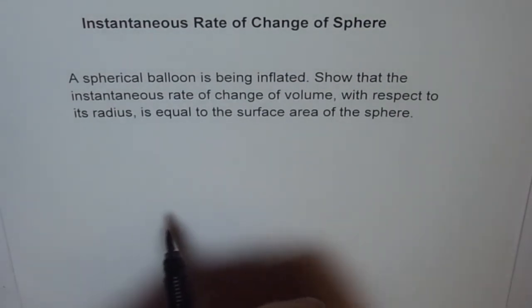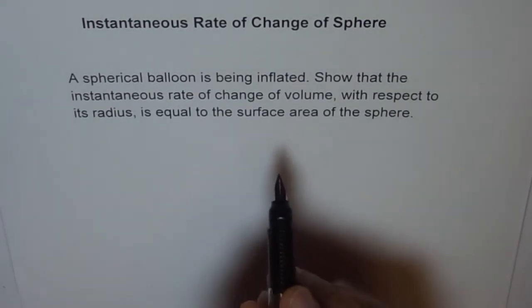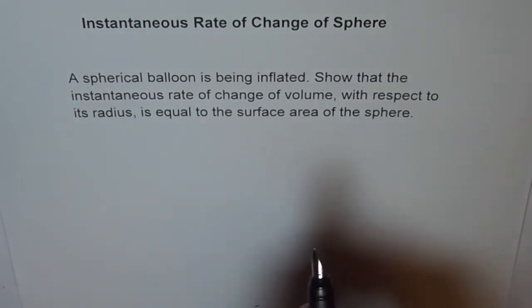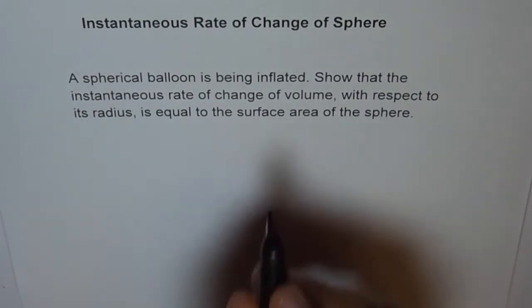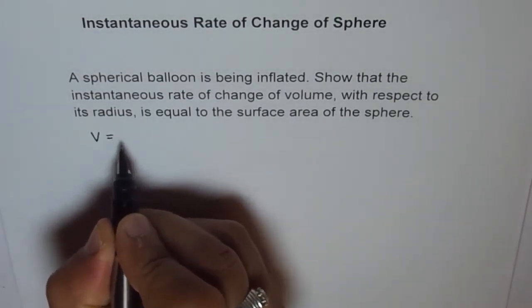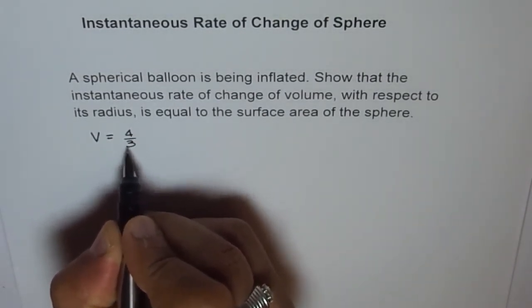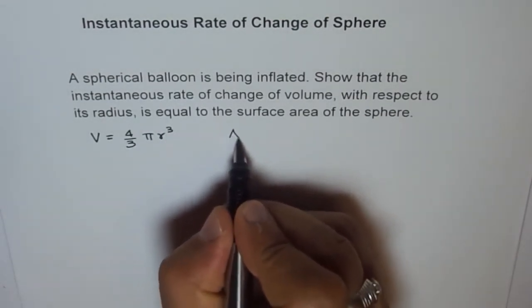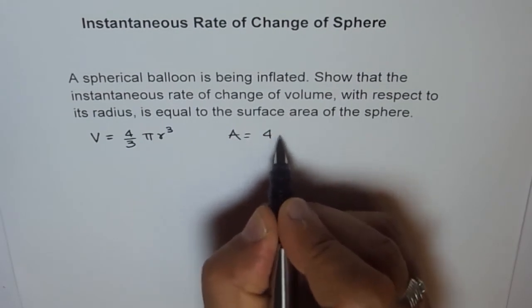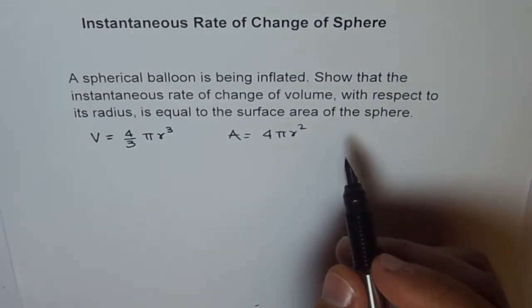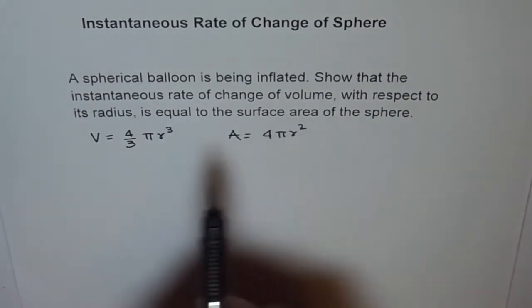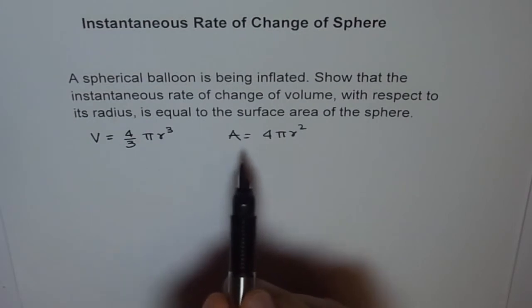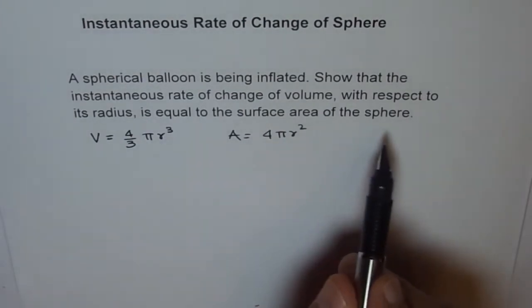The balloon is in the shape of a sphere and we need to find the instantaneous rate of change of volume with respect to radius. The volume of a sphere is 4/3 π r³, and the surface area of a sphere is 4π r². The problem is to show that the instantaneous rate of change of volume with respect to radius is the same as the surface area of the sphere.